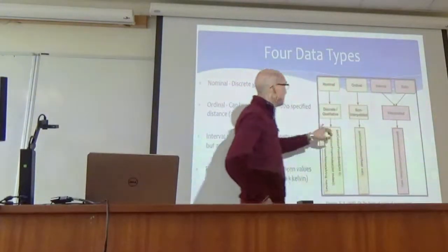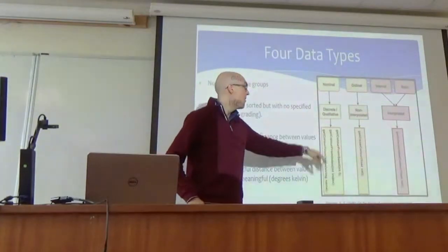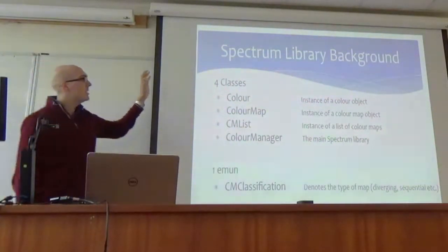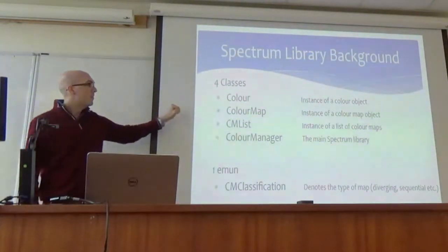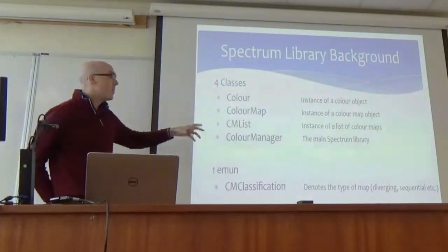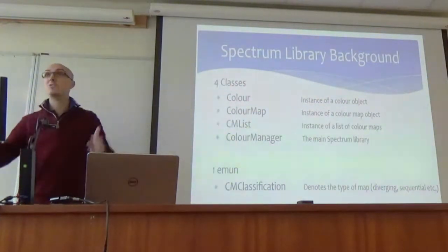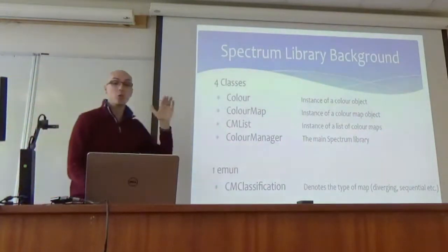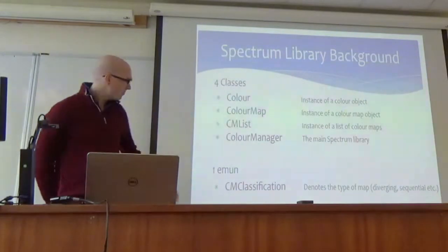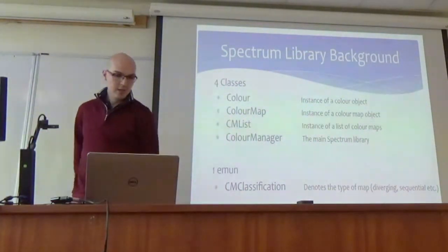We've built this library to accommodate all these different data types — you can get interpolated and non-interpolated values from it. There are a bunch of different methods to extract the right values. The library is a single header file. It has four classes: a Color class, a ColorMap which is essentially a list of colours with helper functions, a ColorMapList that stores all the built-in colour maps and lets you swap between them, and a ColorManager which is the main class you interact with. There is also a colour map classification covering divergent, sequential, and qualitative types.